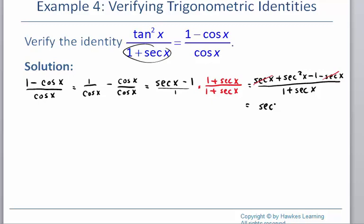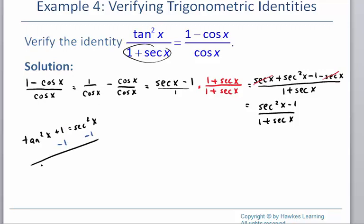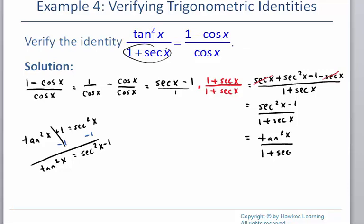Looking at the top, the secant and negative secant cancel, leaving secant squared x minus 1 over 1 plus secant x. Now, we have an identity: tangent squared plus 1 equals secant squared. If I subtract 1 from both sides, that gives me tangent squared x equals secant squared x minus 1. So the secant squared x minus 1 on the numerator equals tangent squared. This completes the problem because we started with the right-hand side and ended with the left-hand side.